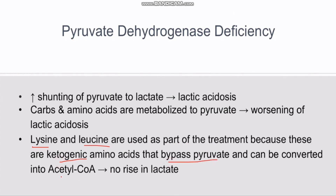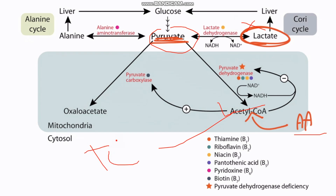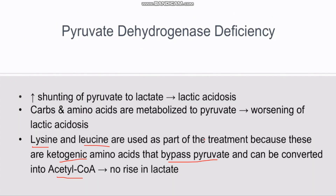Treatment involves a ketogenic diet. Ketogenic amino acids go directly to acetyl-CoA, bypassing pyruvate dehydrogenase, and can enter the TCA cycle directly. This can prevent lactic acidosis. So a ketogenic diet is used as a treatment for PDH complex deficiency.